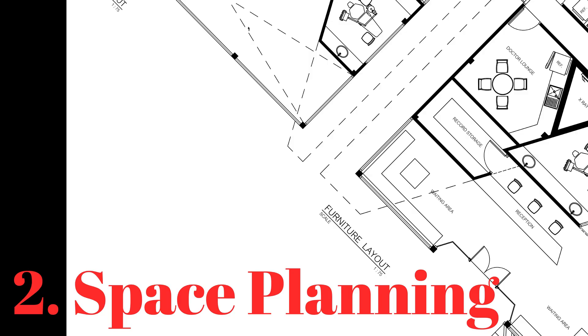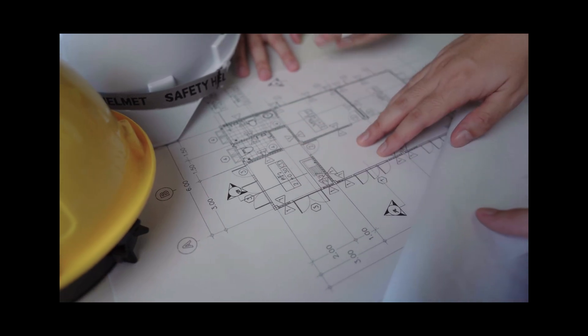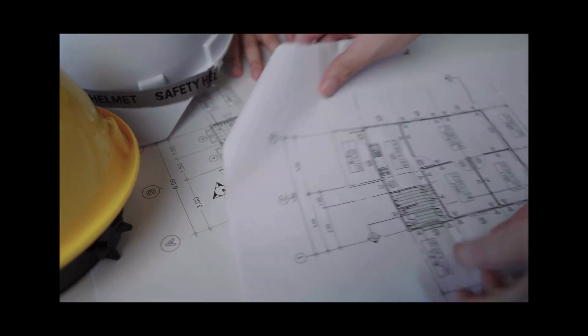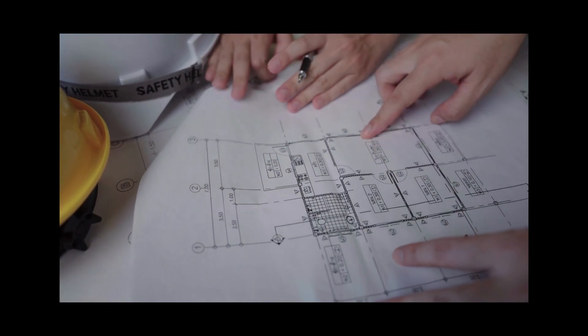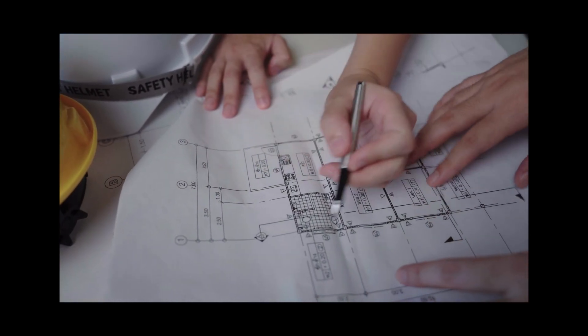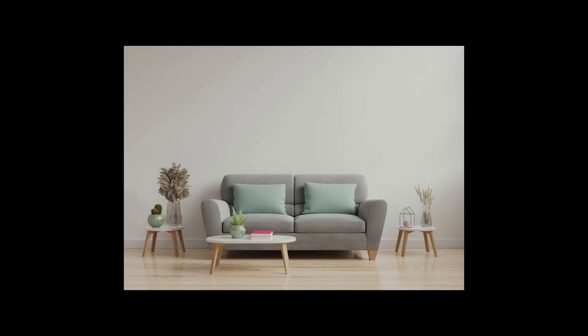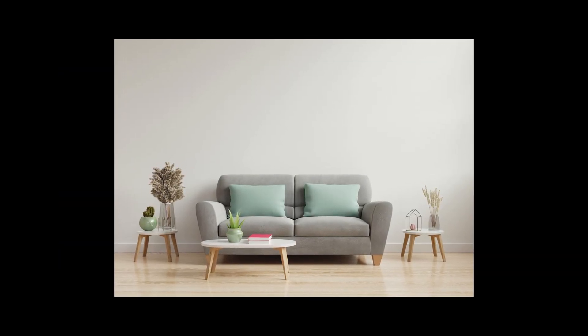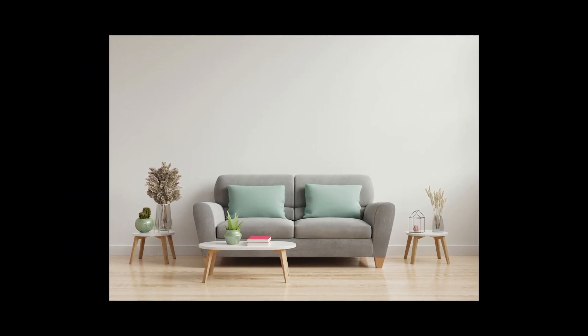Number two is Space Planning. Carefully plan the allocation of space to ensure that each area is utilized effectively. Optimize the layout to minimize wasted space and maximize usability. Consider the size and arrangement of furniture to ensure comfortable and functional living spaces.